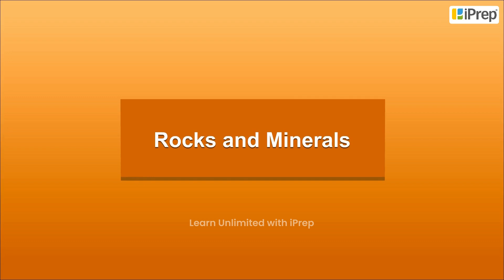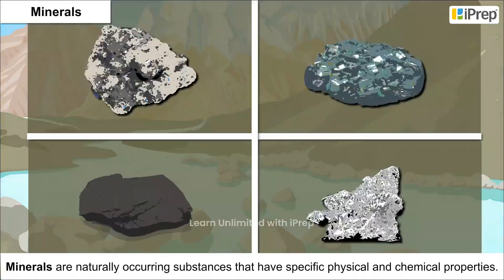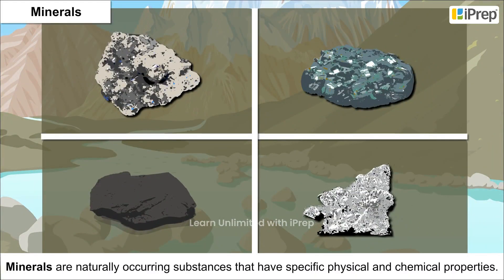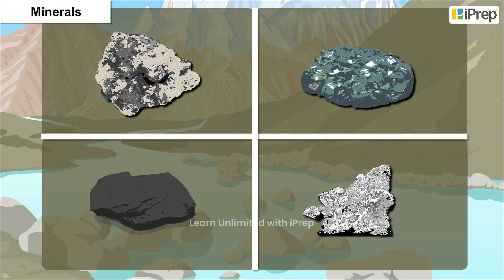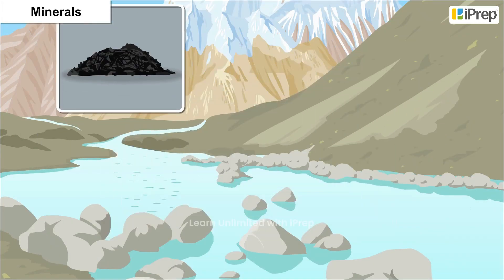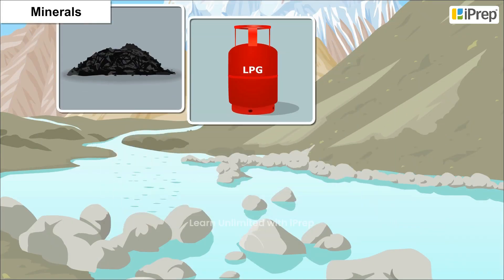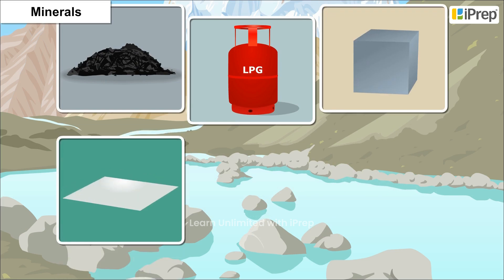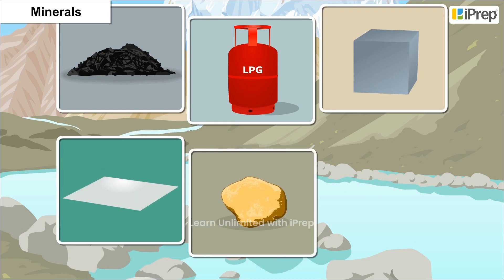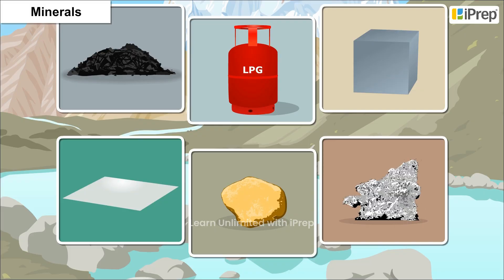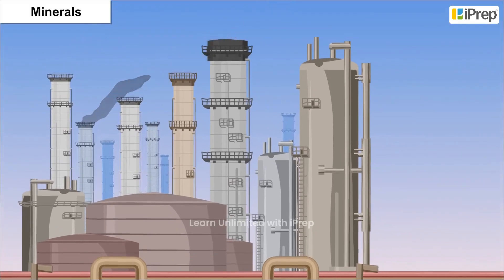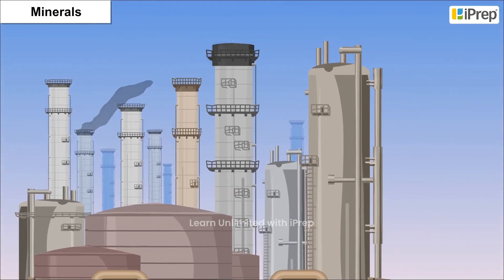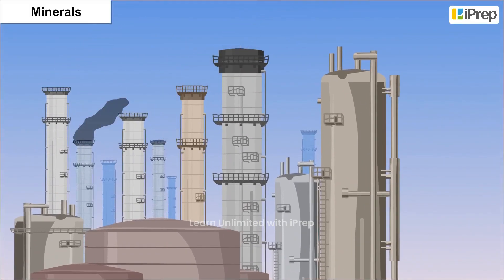Rocks and Minerals. Minerals are naturally occurring substances that have specific physical and chemical properties. They exist as coal, gas, and metals such as aluminium, tin, gold, and silver. These are used in industries as fertilizers, medicines, fuels, etc.